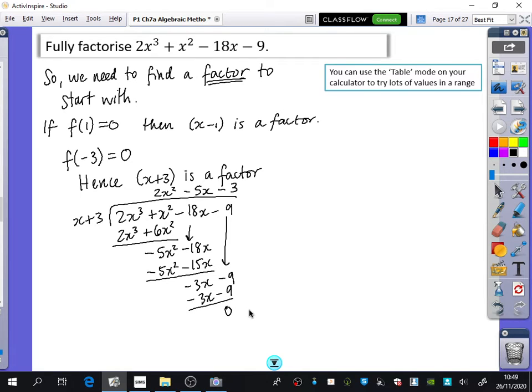Minus 3. And that would give you minus 3x minus 9, which gives you a remainder of 0. And that's good, because we wanted the remainder of 3 to be 0. So now we know that f of x is x plus 3, 2x squared minus 5x minus 3.